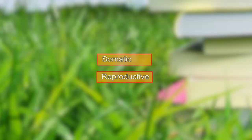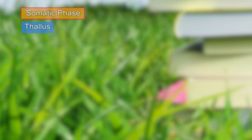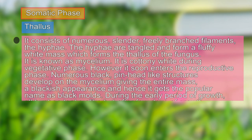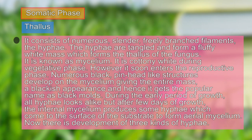The two phases of Rhizopus encountered in the life cycle are the somatic phase and the reproductive phase. In the somatic phase, the most important structure is the thallus, which consists of numerous slender, freely branched filaments known as hyphae. The hyphae are tangled and form a white fluffy mass, which is basically known as the mycelium.